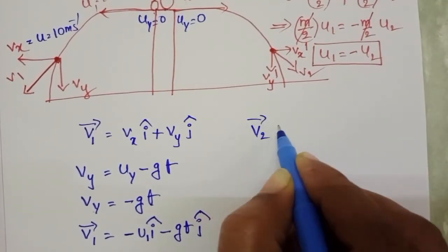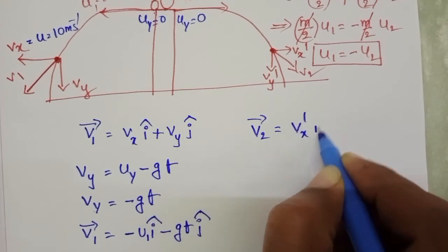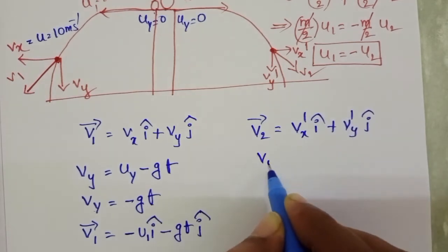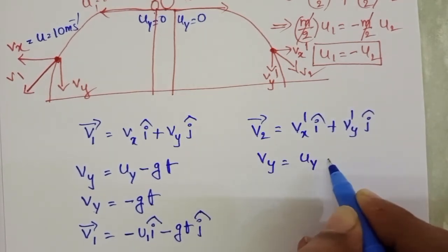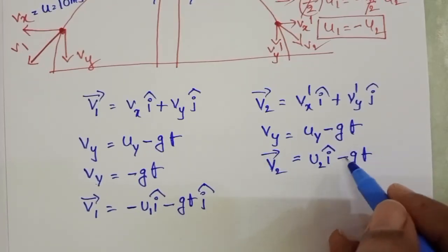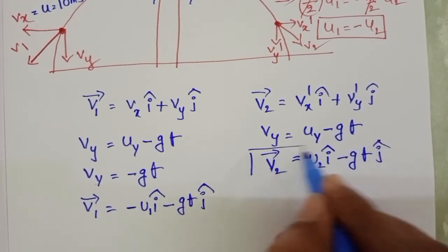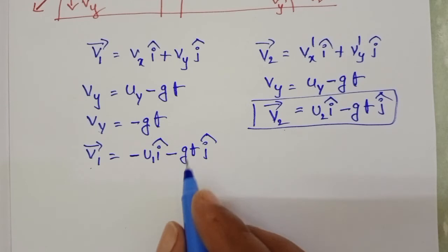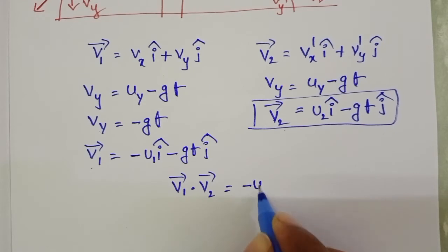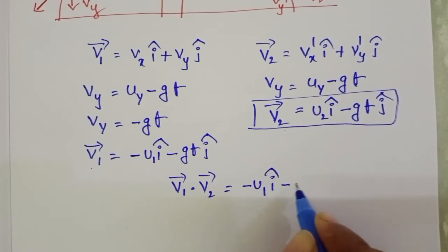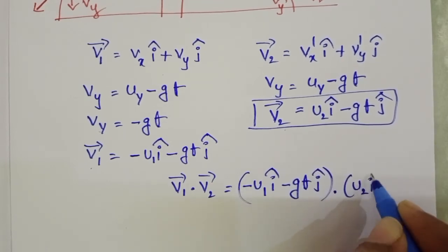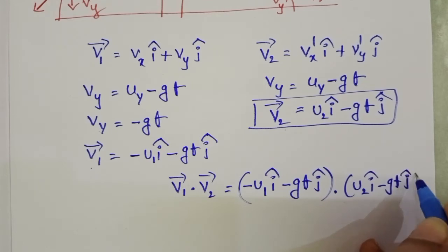Now V2 = Vx′ î + Vy′ ĵ. The vertical component Vy′ = Uy − gt = 0 − gt = −gt. Since the second fragment moves in the positive x-direction: V2 = U2 î − gt ĵ. These two vectors are to be perpendicular to each other, so we apply the dot product condition.